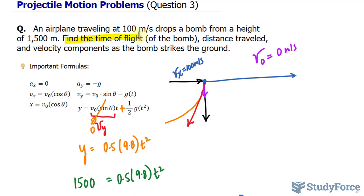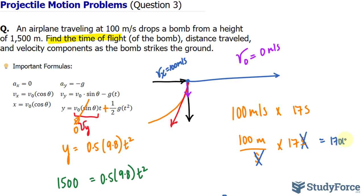Then we have the distance traveled. If it takes 17 seconds to reach the ground and the airplane was moving at 100 meters per second, all I have to do is take 100 meters per second and multiply it by 17 seconds. Using dimensional analysis, you can see how the units cancel out. Multiplying these out, it's 1700 meters.